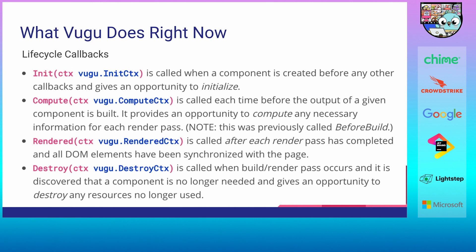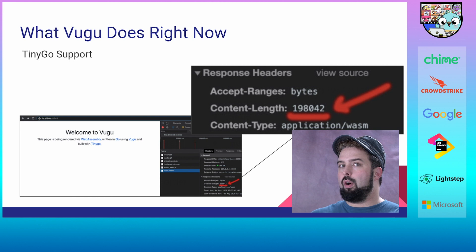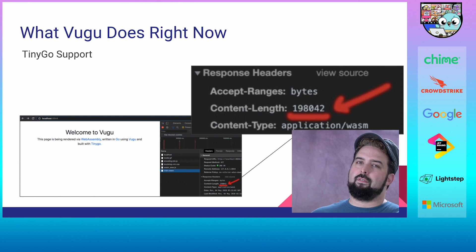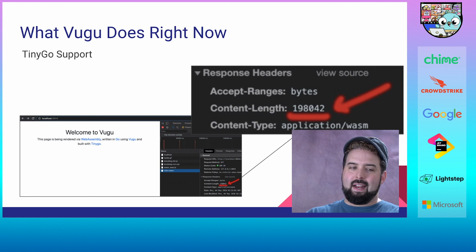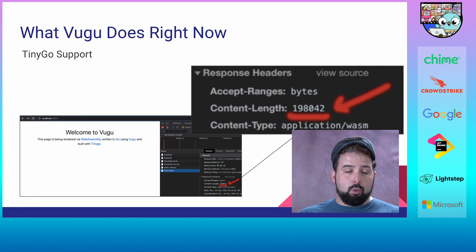Components have lifecycle callbacks, added recently: a call to initialize the component, a function for pre-computation before rendering, a callback after rendering, and a cleanup destructor-like call. There's also TinyGo support — TinyGo as a compiler aims for about 95% of Go functionality to achieve significantly smaller file sizes, though there are some challenges. It's going to keep getting better, and hopefully very soon we'll be able to use TinyGo to compile full-featured web applications.